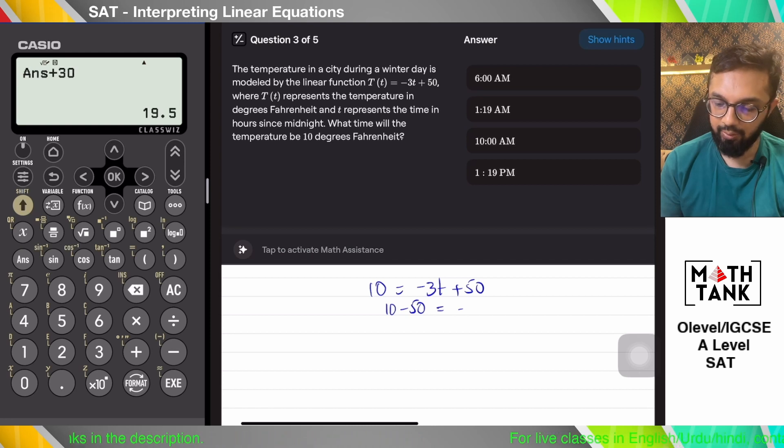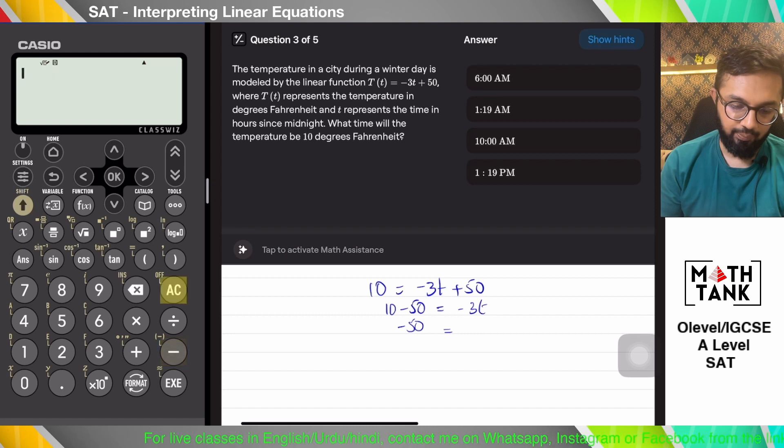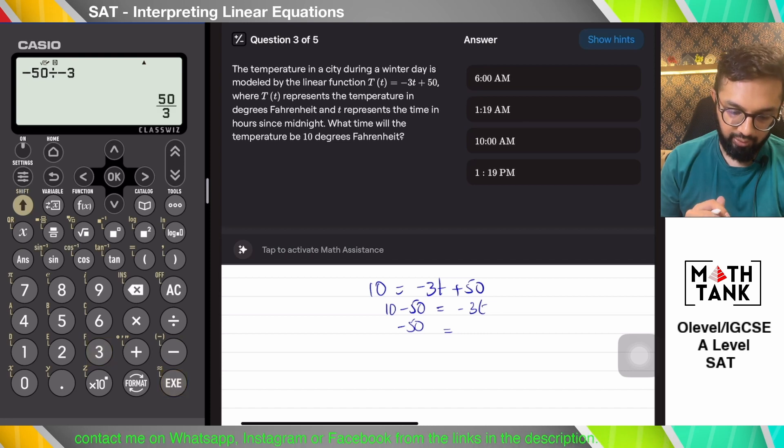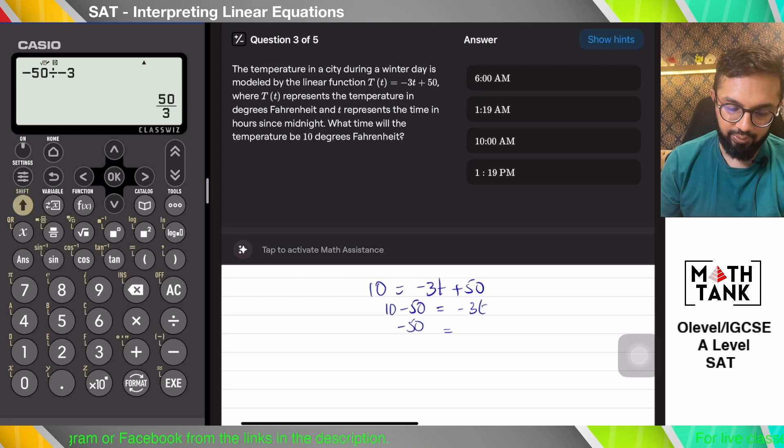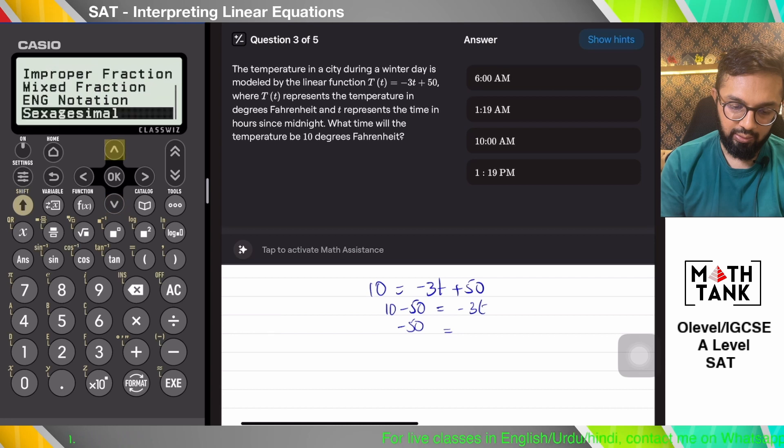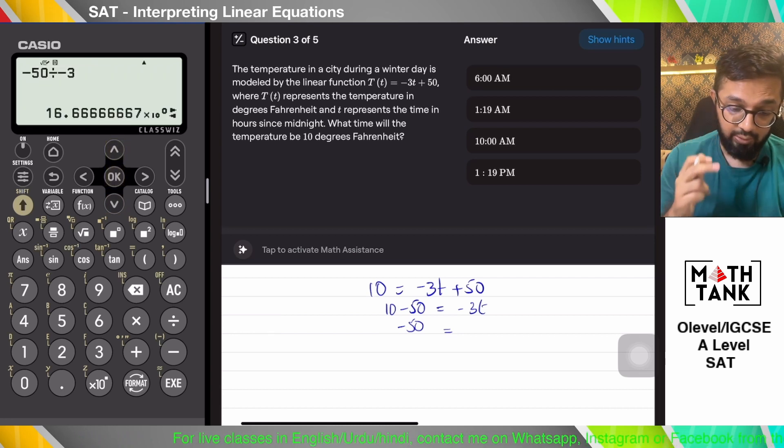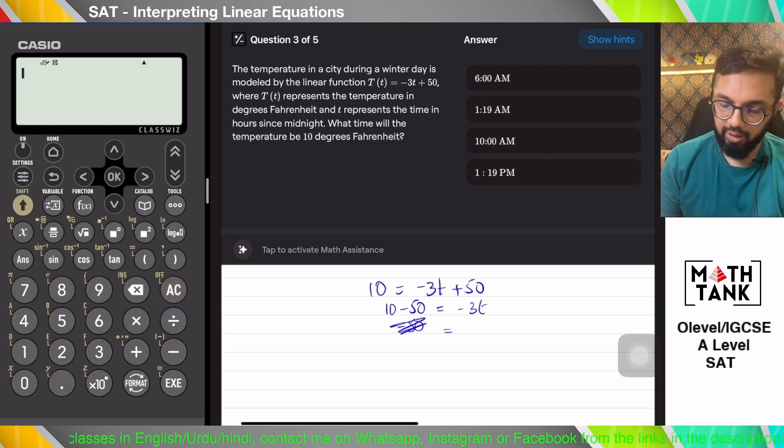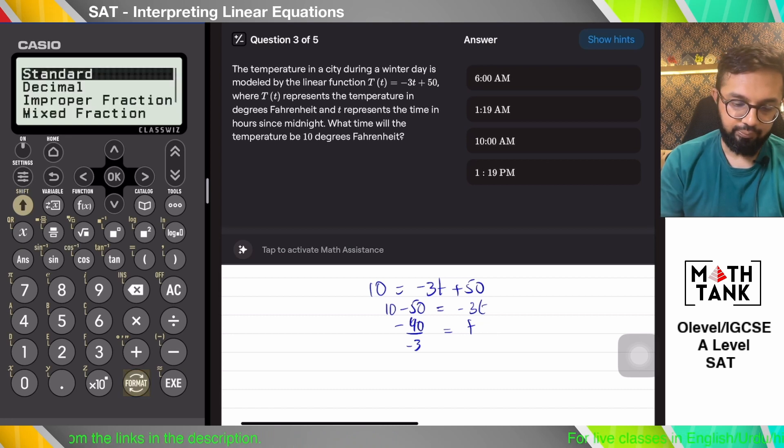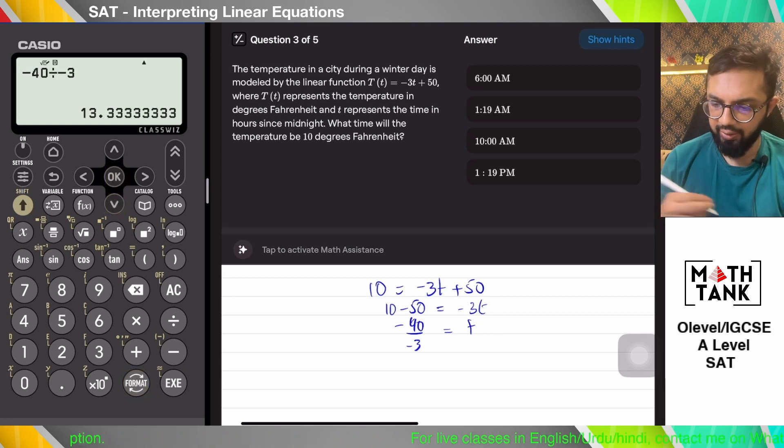That's midnight. So minus 3T, minus 50 divided by minus 3. Then I need to change this into hours and minutes. No, it's minus 40, not minus 50. Minus 40 divided by minus 3. So that's 13.33, which means it's 1 PM. So it should be 1:19 PM.